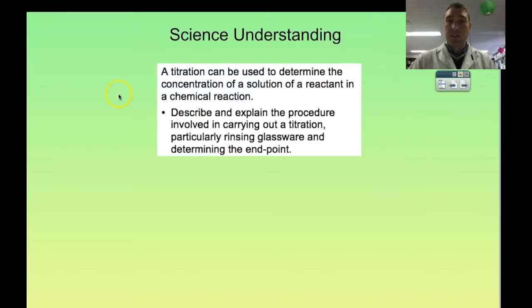So the science and understanding we're going to look at: a titration can be used to determine the concentration of a solution of a reactant in a chemical reaction. We're going to describe and explain the procedure involved in carrying out a titration, particularly rinsing glassware and determining endpoint. So let's go to a video of doing that.